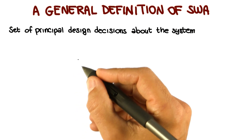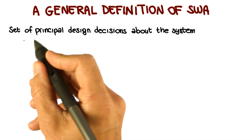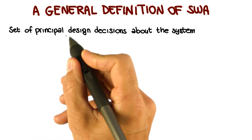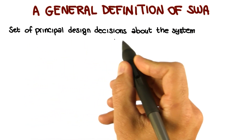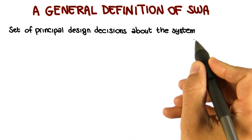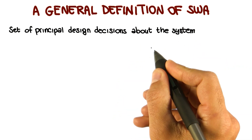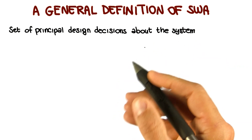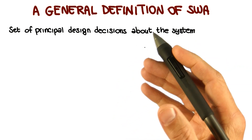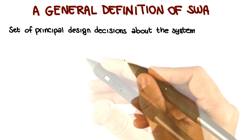I'm going to define a software systems architecture as the set of principal design decisions about the system, where 'principal' here implies a degree of importance that grants a design decision architectural status.